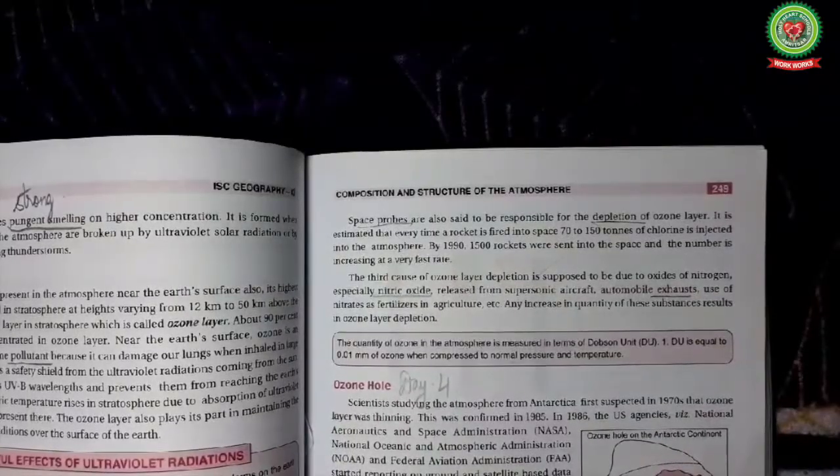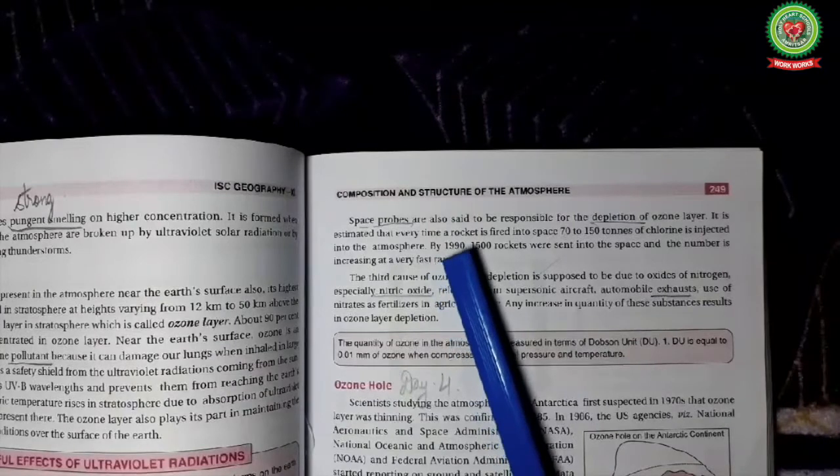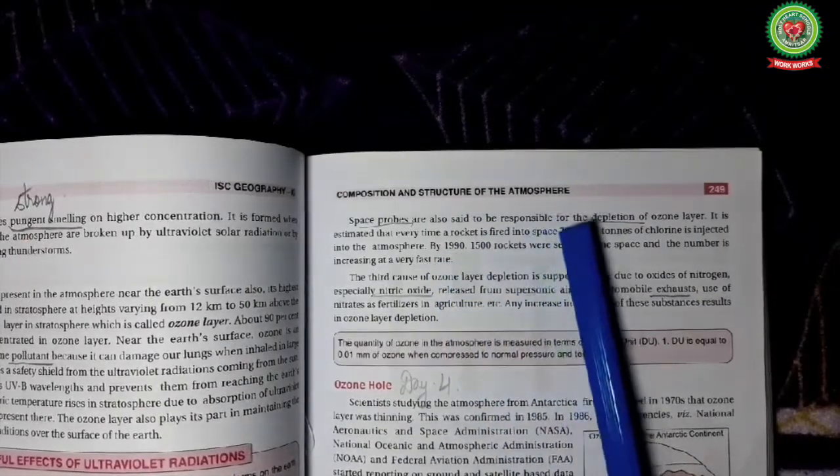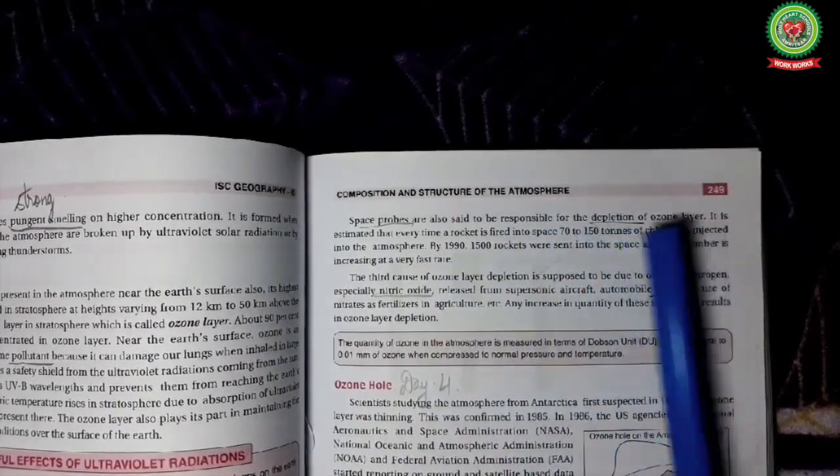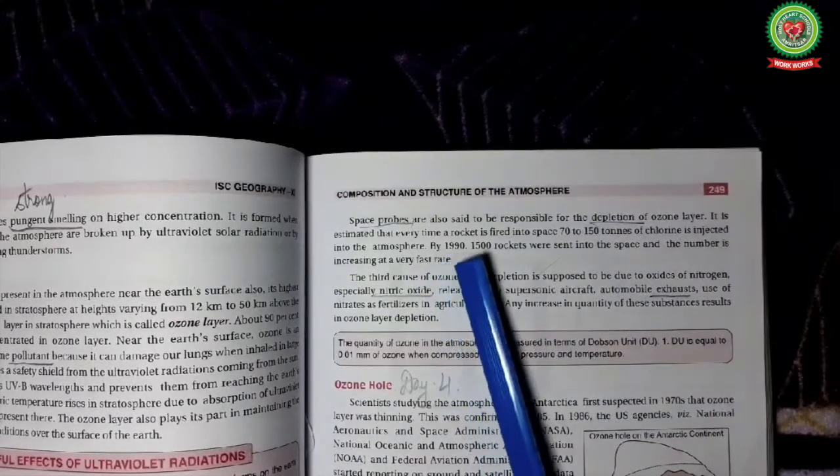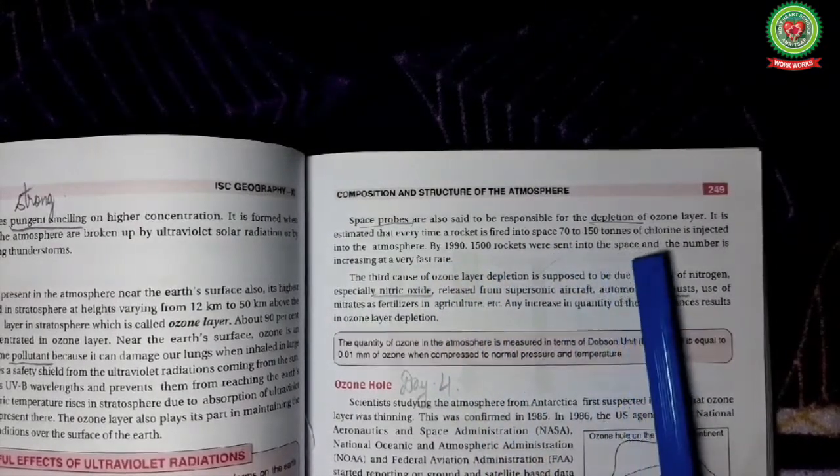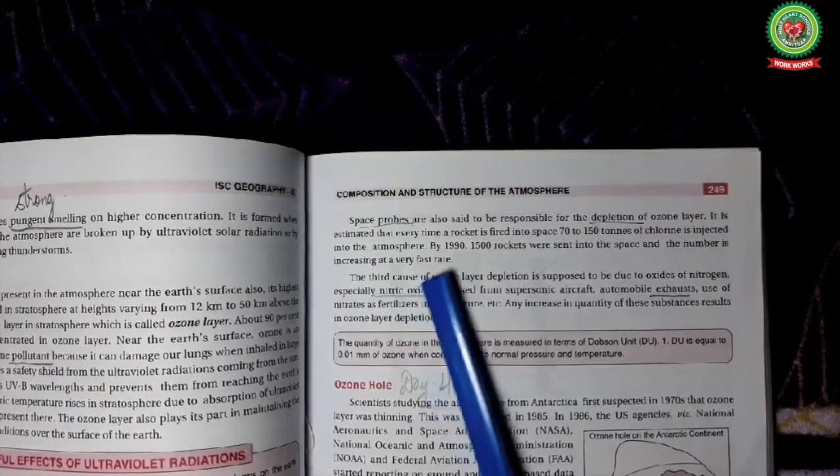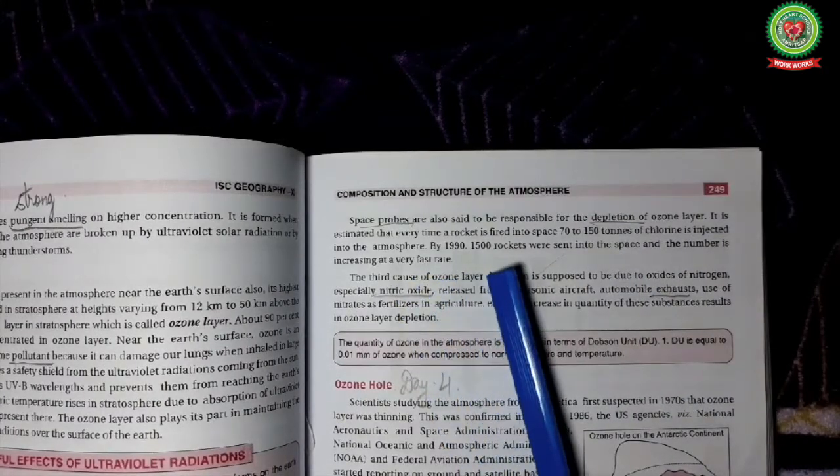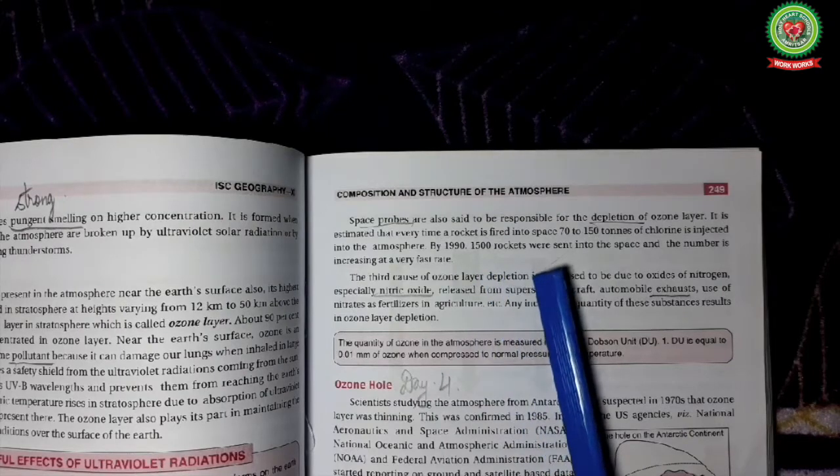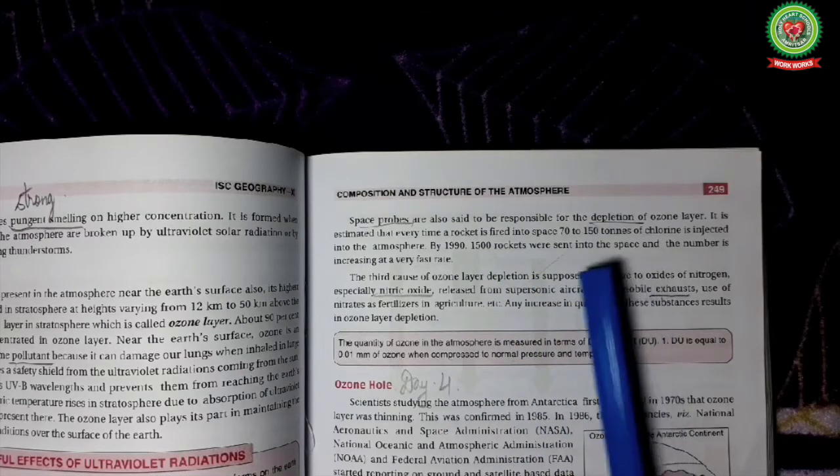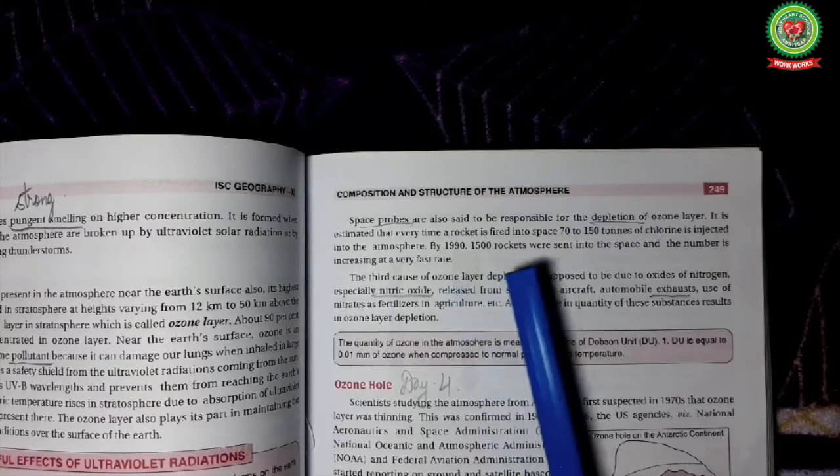Other than the CFC, the space probes are also responsible for depletion of ozone layer. It is estimated that every time a rocket is fired into space, 70 to 150 tons of chlorine is ejected into the atmosphere. By 1990, 1500 rockets were sent into space and the number is increasing at a very fast rate.